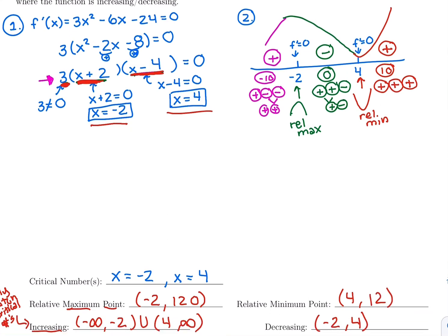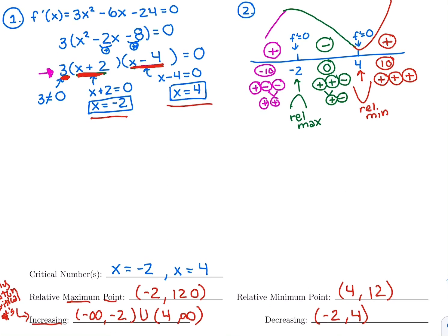So the relative max is at negative 2, 120 and the relative min is at 4, 12. The intervals of increasing and decreasing all come from these same two steps: take the derivative, set it equal to 0, and make a sign chart by plugging into the derivative. Then draw your conclusions, and only plug into the original function when you need the y value of a point.